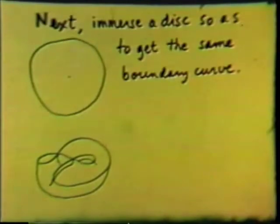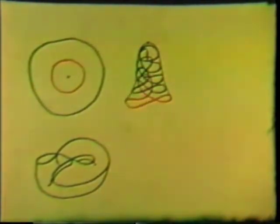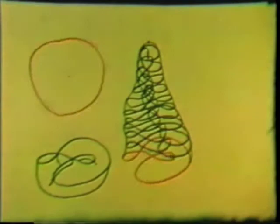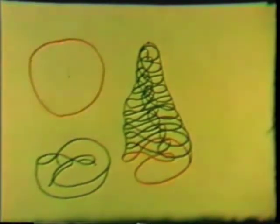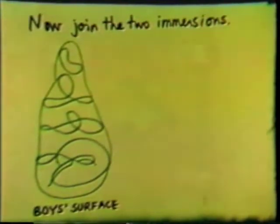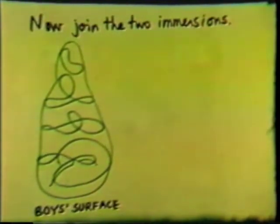Next, we immerse a disc so as to get the same boundary curve. The red circles start at the center and grow to the boundary of the disc. As they sweep out the disc, the sketch on the right shows where the corresponding points appear in 3-space. Now join the two immersions. The result is Boyd's surface, an immersion of the projective plane in R3.